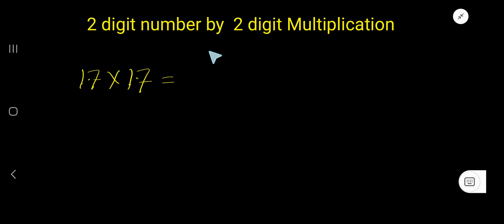To multiply a 2-digit by 2-digit number with decimals, here I have taken this example: 1.7 times 1.7. First, multiply these two numbers as usual - that is, ignore the decimal point first.